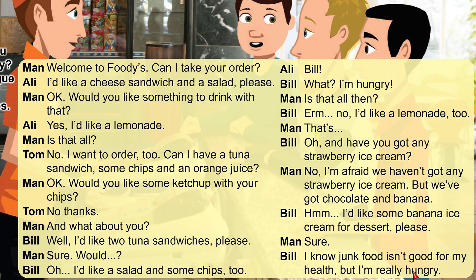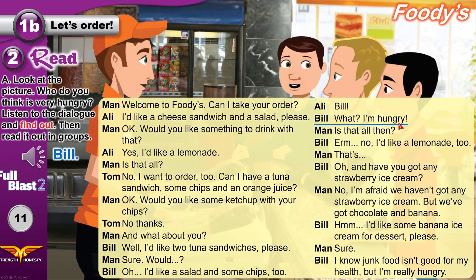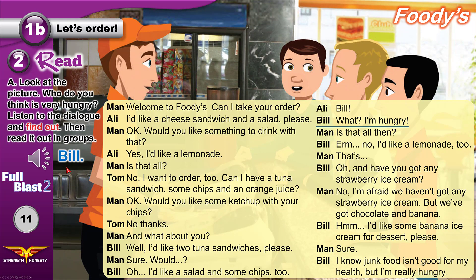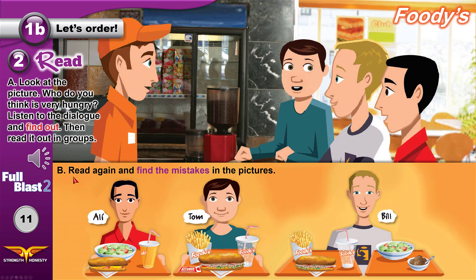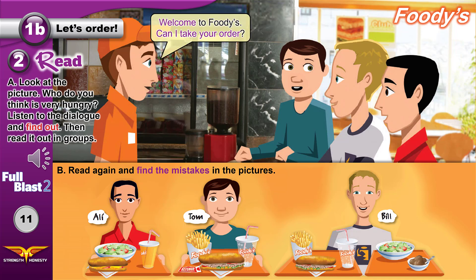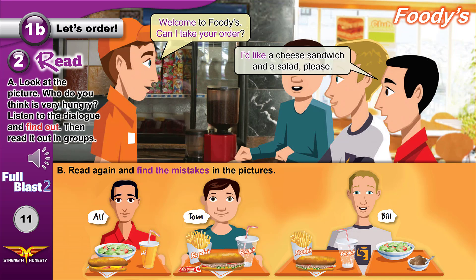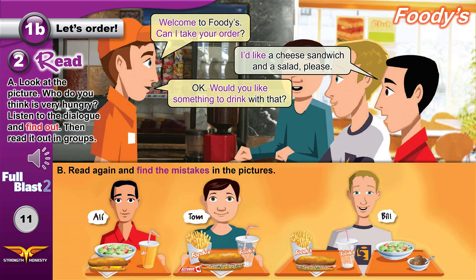Now, who's hungry? Bill is hungry! Now read again and find the mistakes — things that are not correct in the pictures. Welcome to Foodies! Can I take your order? I'd like a cheese sandwich and a salad, please. Okay, would you like something to drink with that? Yes, I'd like a lemonade.